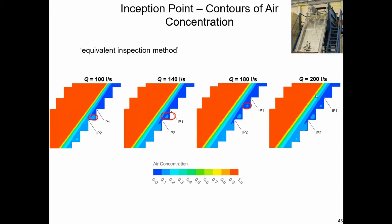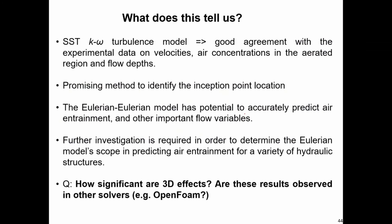To summarise: the K-omega SST model seems to be the best RANS approach; we've got a promising way to identify where inception points will be; the Eulerian model has some potential. However, it needs further investigation — this is a fairly simple geometry and real spillways have more complicated geometries. It needs more work before recommending routine use, but it definitely looks like a method worth exploring further, and it's not currently used at all in industry.